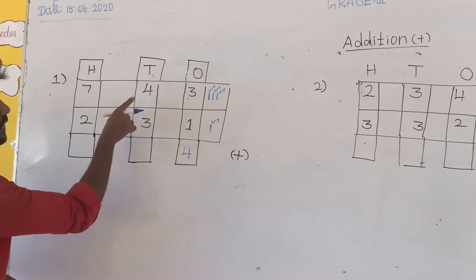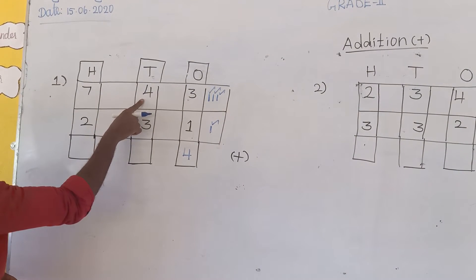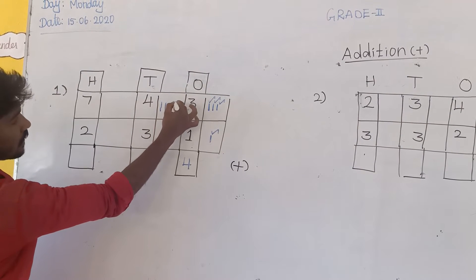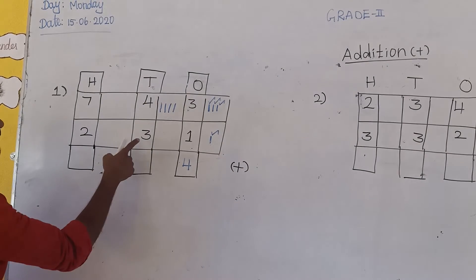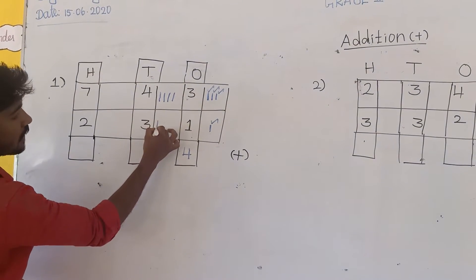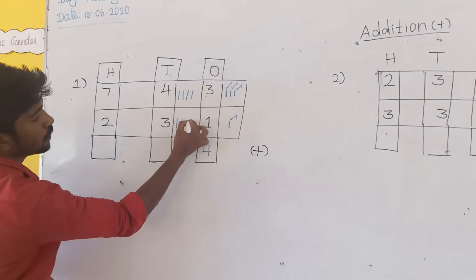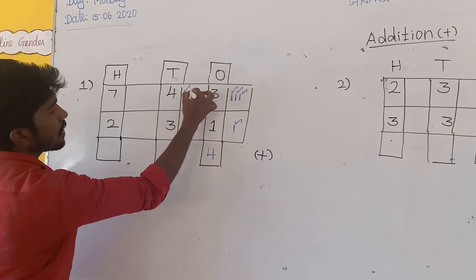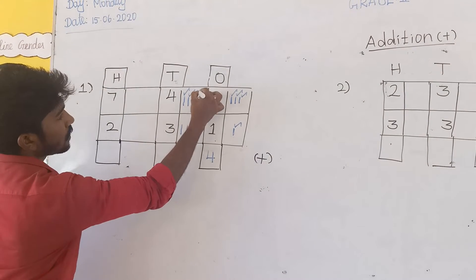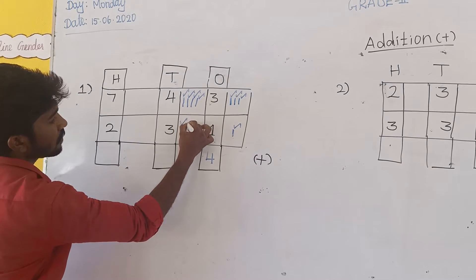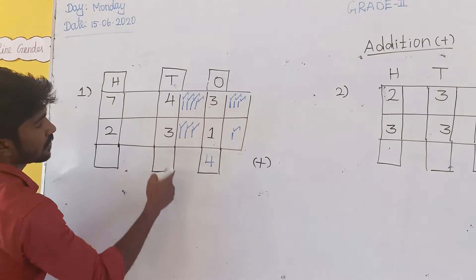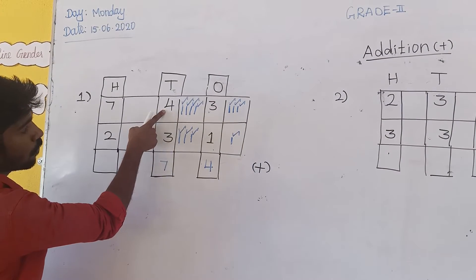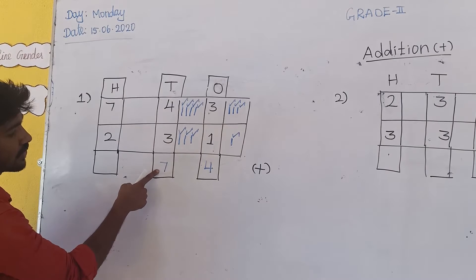Then second, the 10s value. 10s value: first value is 4, so draw 4 lines. Then the second value is 3. Now add these lines: 1, 2, 3, 4, 5, 6, 7. So 4 plus 3 is equal to 7.